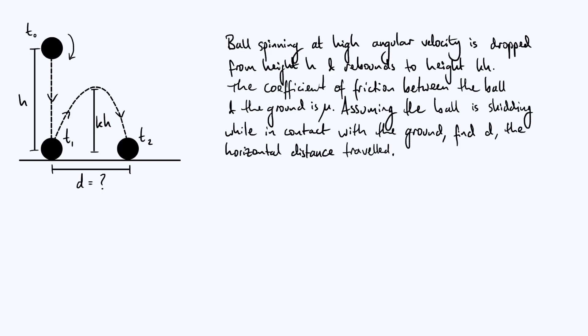Now it's going to be rough ground, the coefficient of friction between the ball and the ground is mu, and because the ball is spinning against rough ground there is going to be a frictional force which is going to set the ball in motion horizontally as well, hence the parabolic trajectory of the ball when it bounces. So the question is, assuming that the ball is skidding during its entire period of contact with the ground, we have to find the value d that I've labelled on the diagram, the horizontal distance between the first and second impacts with the ground.